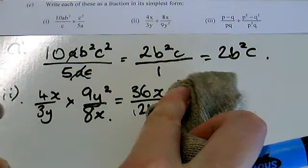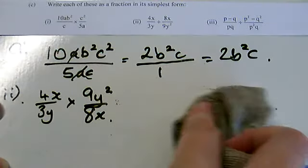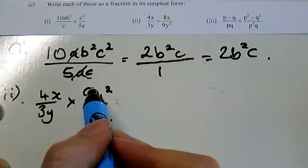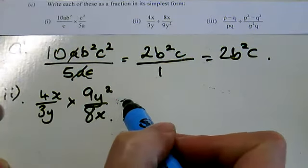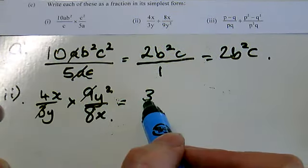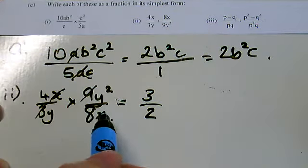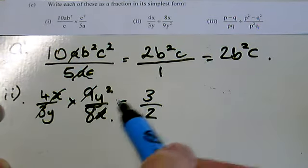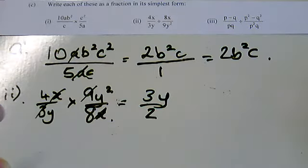If you like, you can actually cancel these before you multiply. So I've got a 9 here and a 3 here, leaves a 3 on the top. I've got a 4 here and an 8 here, leaves a 2 on the bottom. x cancels with x, y squared over y is just y, so you can do it that way if you prefer.